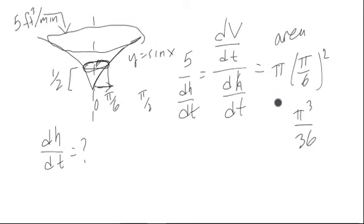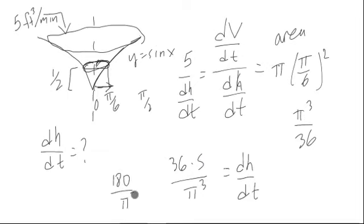Then to find dh/dt, so this ratio is equal to this, multiply the dh/dt over, and then multiply by the reciprocal of this over here. So we get 36 times 5 over pi cubed is dh/dt, which is 180 over pi cubed, and this is feet per minute.